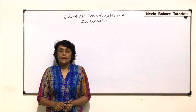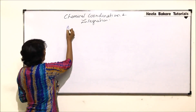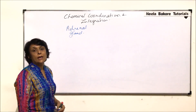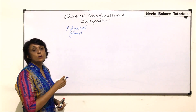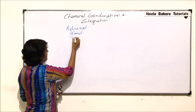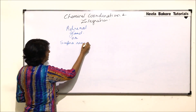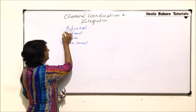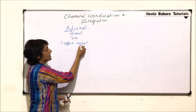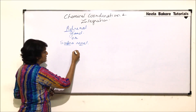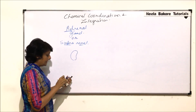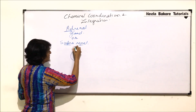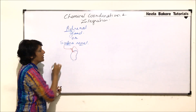The next endocrine gland we are taking up is the adrenal gland, also known as the suprarenal gland, as it is located on the kidneys. The names given to it are associated with its location — 'adrenal' meaning adjacent to the renal part, and 'suprarenal' because it sits just above the kidney in the form of a slightly triangular structure.